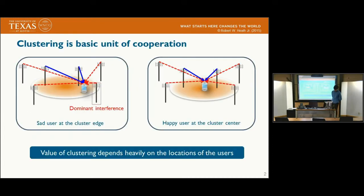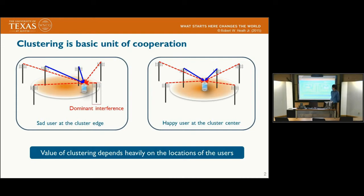Base station cooperation is actually known as an effective approach for improving the edge users' performance. However, due to the overhead associated with coordinating base stations, the practical approach to cooperation is base station clustering, which means that we only include a limited number of base stations in our cooperative sets.